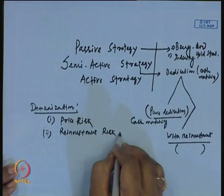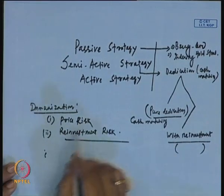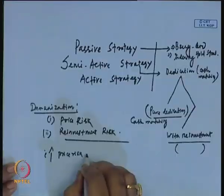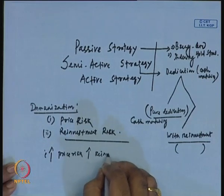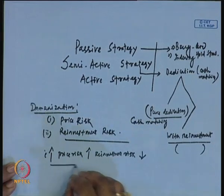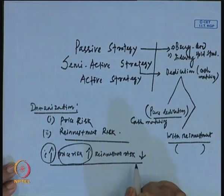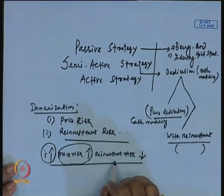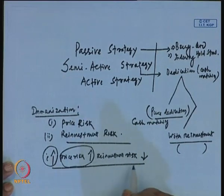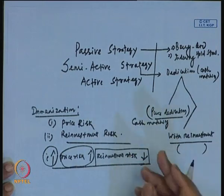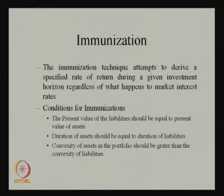Price risk and reinvestment risk both move in opposite directions — they are parts of interest rate risk. If the interest rate goes up, the value of the bond goes down, raising the price risk. But at that time, the reinvestment risk will be low because investment opportunities are more available when interest rates are higher. That way the reinvestment risk is neutralized, and the price risk and reinvestment risk offset each other.